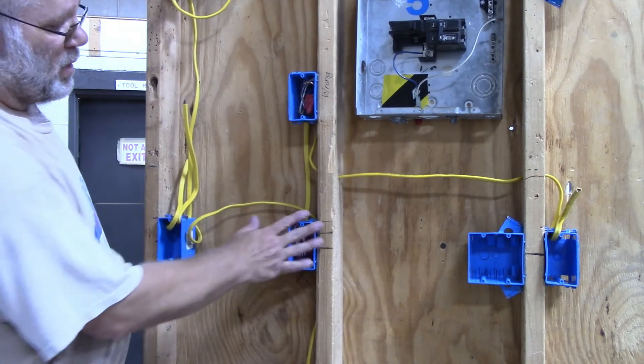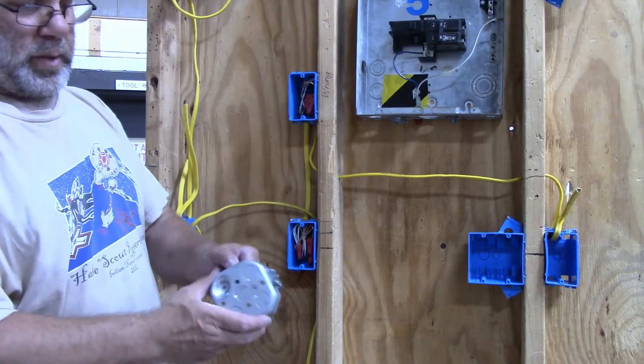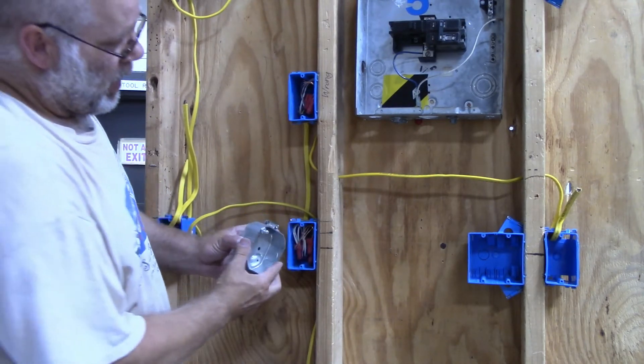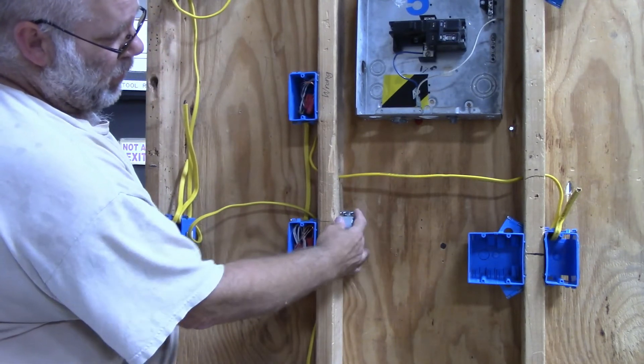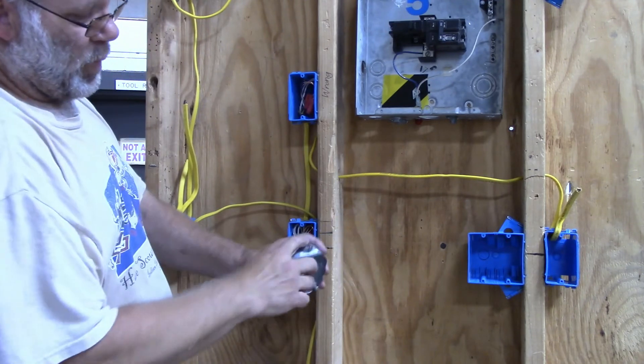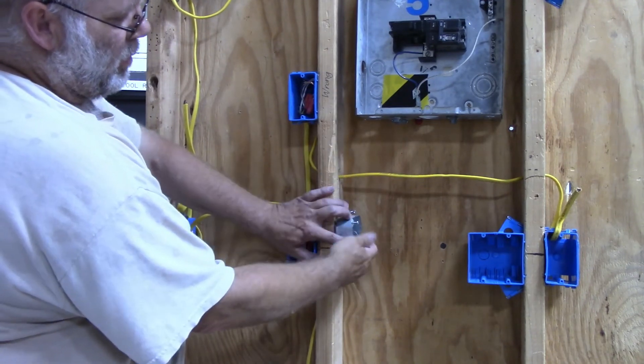So you can use these single gang boxes like this. You can use this octagon box, and you can mount it on the inside of the stud like this, and put a blank cover on it when you get done. Romex connector, run the Romex into the Romex connector, and do all your work here.